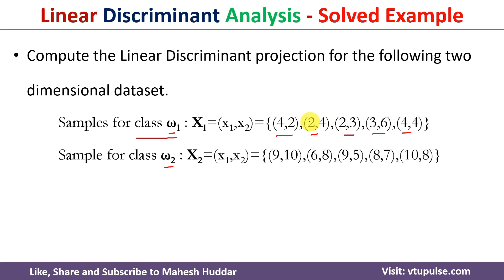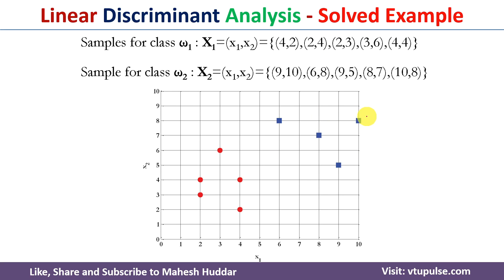Given this particular dataset, we can represent it in two-dimensional space. What we need to do is convert the data from two-dimensional space into one-dimensional space and find a new axis so that we can project the data onto that new axis. I have already discussed each of those steps in the previous video, and now we will apply those steps to get the new axis.